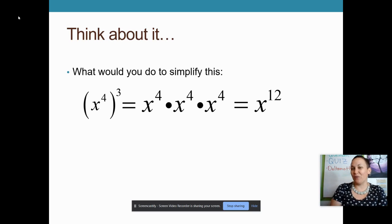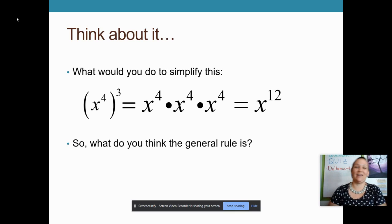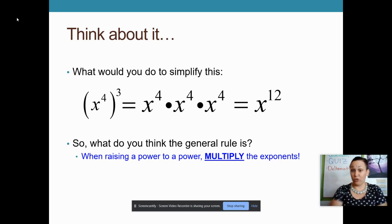But now there is a quicker way that we can get to the answer. So I want you to think about that for a second. What's a quicker way to get from x to the fourth to the third into x to the twelfth? And the answer is that we could just multiply the exponents together. So make sure you write down that blue sentence. That's the most important thing about this video. When raising a power to a power, you're going to multiply the exponents.